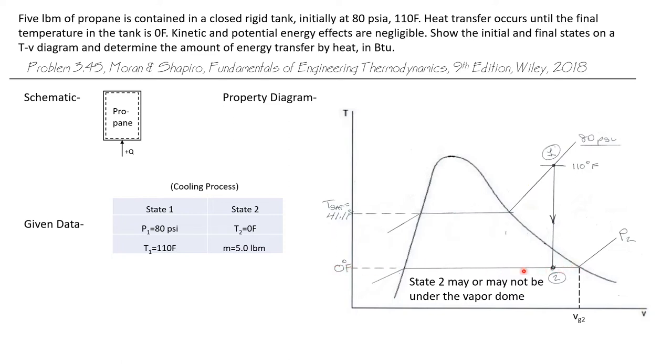And I don't know at this point whether state two is a saturated mixture or if it actually ended up here above the vapor dome where it would still be a superheated mixture. If it's a saturated mixture, then V2 will be to the left of V sub G at zero degrees Fahrenheit.